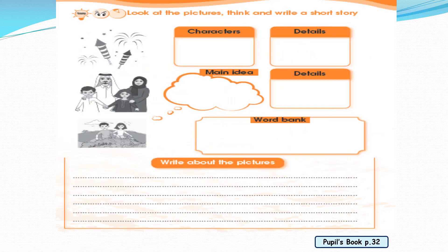Look at the picture, think, and write a short story. You can write it on your own — write the characters and details, main idea, then write your story. You can write about Hala February.